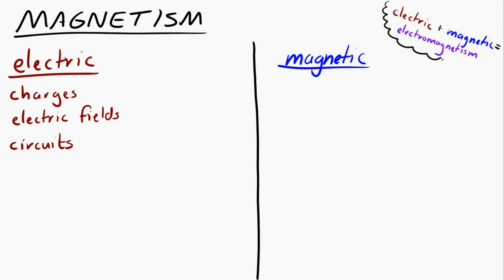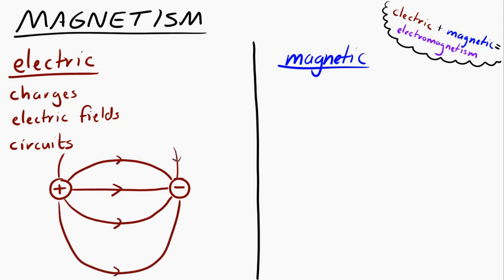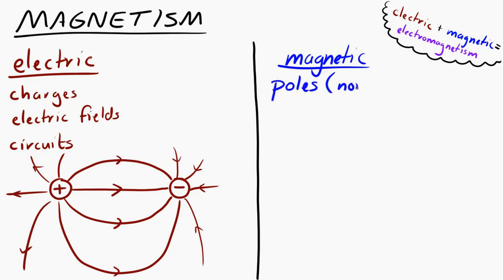I'll draw a little diagram. Electric fields are created by charges — positive charges and negative charges — and we have a way to represent that with electric field lines. When we talk about magnetic fields, those are not directly caused by charges. Those are created between what we call poles. Electric charges come in positive and negative. Magnetic poles come as north and south.